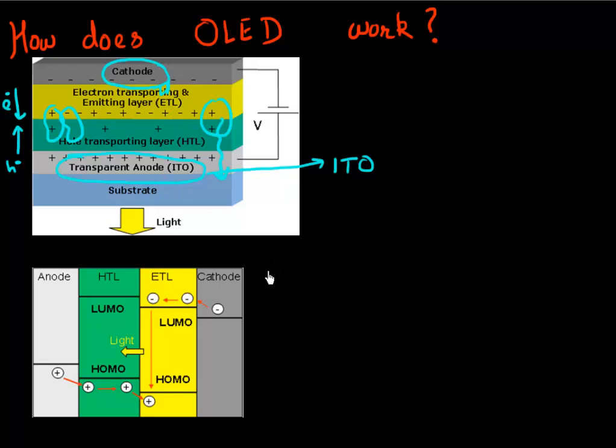In terms of band diagrams, this is how it looks. Remember, these are organic LEDs, so they are organic layers. They have these HOMO and LUMO layers, which is equivalent to having a conduction band and a valence band in a crystalline material.